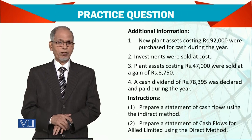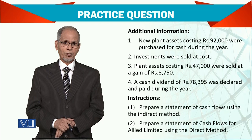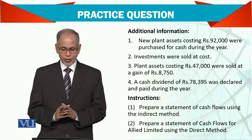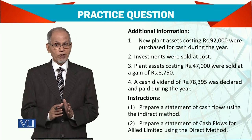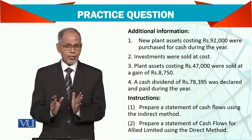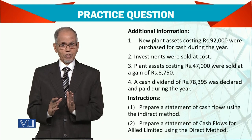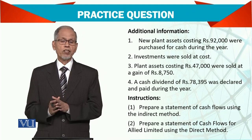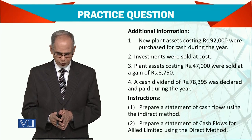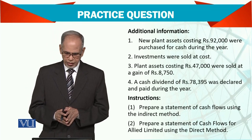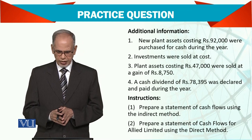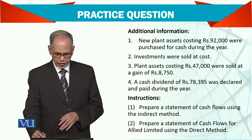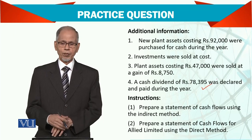A gain of 8,750 — we need to work out how much depreciation was accumulated and what the book value (carrying value) of the asset was at the time of sale. A cash dividend of rupees 78,395 was declared, which is a large amount paid out to shareholders.